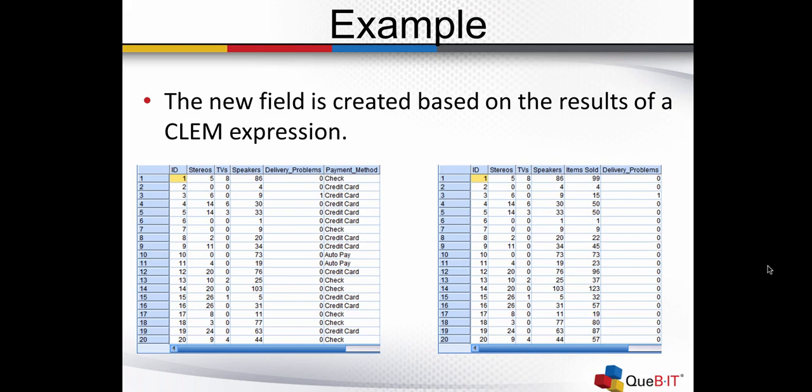In this example, the table on the left has the number of stereos, TVs, and speakers sold. The table on the right now has a new field, items sold, that basically adds up the number of stereos, TVs, and speakers sold. That's an example of how you can use the Derive node as a formula to create a new field — in this case, the total number of items sold.